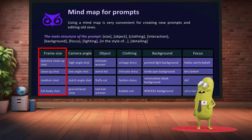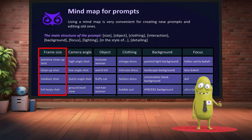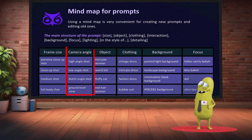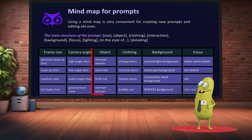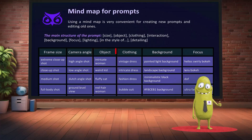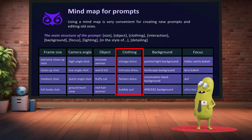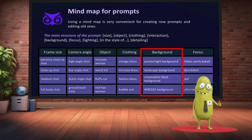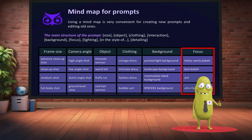The Frame Size column contains various frame sizes and types you can specify, from close-ups to wide shots. Camera Angle offers options for camera angles like high, low, tilted, and other perspectives. Object is the main subject to be the focal point. The Clothing column lets you detail characters' clothing and style. Background refers to the scenery, landscape, or backdrop around the object. Focus helps control the focus or blur of certain parts of the composition.